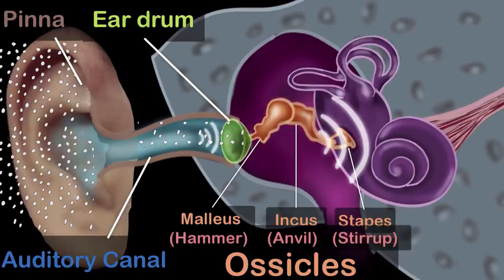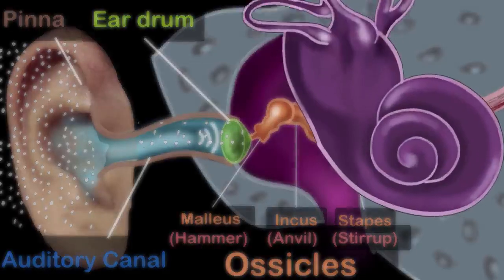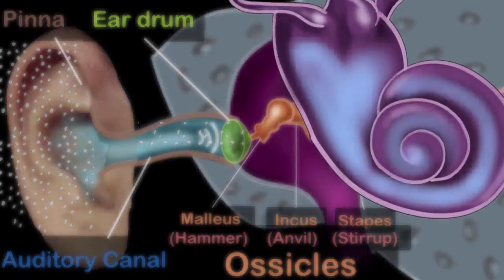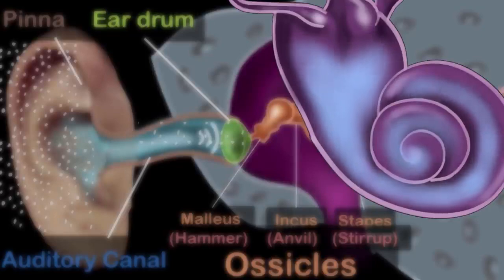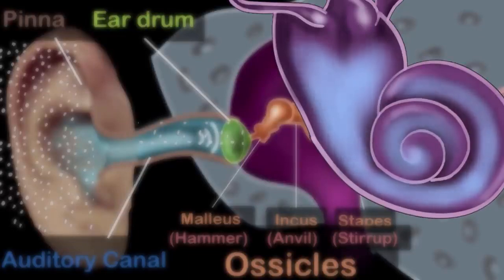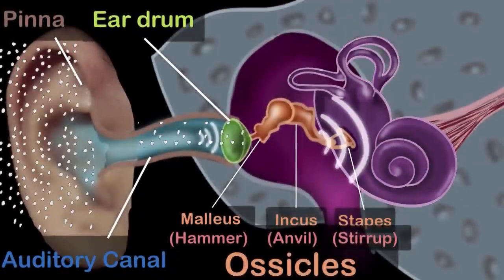But why do we need to increase the pressure of the sound waves? Because the inner ear consists of a liquid, not air. So the vibrations must transfer into a liquid, and you might already know that vibrating or moving particles of liquid is much harder than moving particles of air — which is why it's very easy for you to swing your arms in the air, but it's pretty difficult to do that inside water, like in a swimming pool. And so to set this liquid in vibration, the pressure has to be high enough.